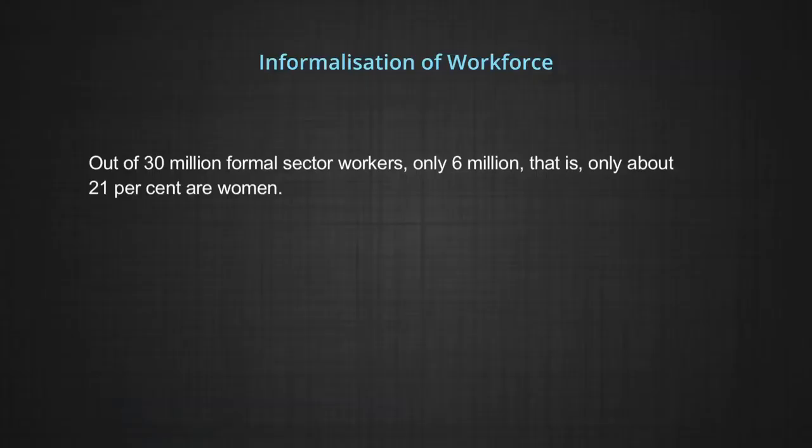There are about 473 million workers in the country, of whom only about 30 million are in the formal sector — just 6 percent. Thus, the remaining 94 percent are in the informal sector. Out of these 30 million formal sector workers, only 6 million — about 21 percent — are women. In the informal sector, male workers account for 69 percent of the workforce.